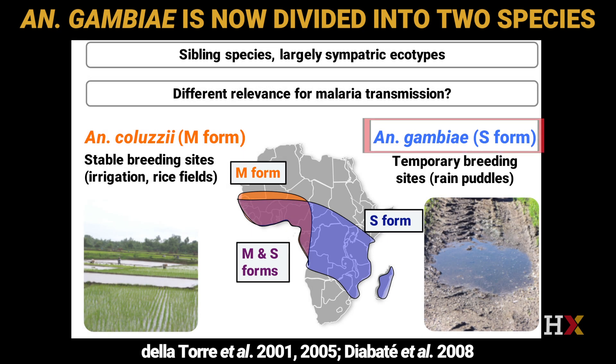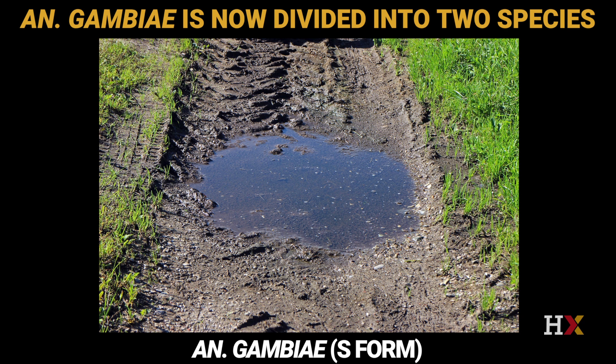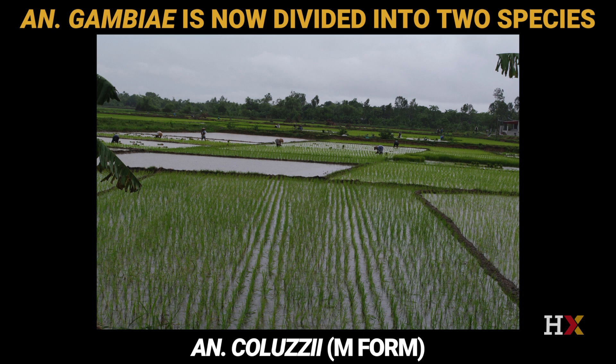Looking at the major malaria vectors Anopheles gambiae and Anopheles coluzzii, these until recently were believed to be the same species and just different molecular forms. Anopheles gambiae was previously known as Anopheles gambiae S-form, while Anopheles coluzzii was previously known as Anopheles gambiae M-form. They have very similar biting behavior, both tending to feed on humans late at night and indoors. However, they show quite different ecological habitats during larval development: Anopheles gambiae tends to prefer temporary breeding sites such as rain puddles, while Anopheles coluzzii prefers permanent breeding sites such as rice fields. We don't yet know whether these two species contribute differently to malaria transmission.